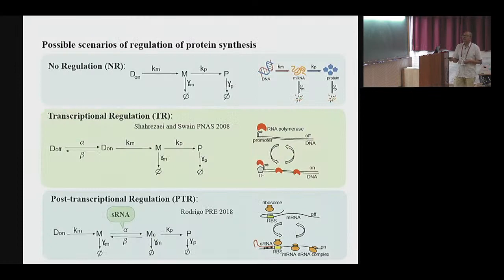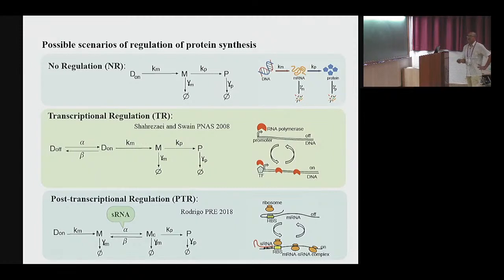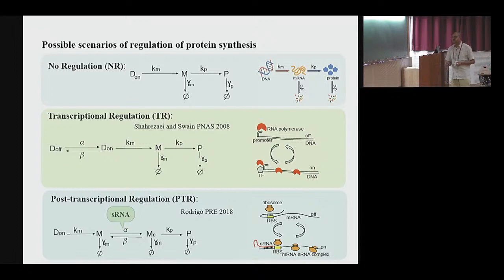Now we bring proteins into the picture. This is the birth-death process giving mRNAs, to which I latch on the protein dynamics — the translation step. There is no regulation here; the gene is always on. This is my control case. In the transcription regulation model, I have this on-off dynamics. Some mechanism, such as transcription factors enabling binding of RNA polymerase, allows transcription to take place.